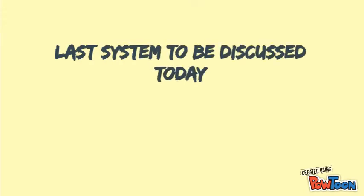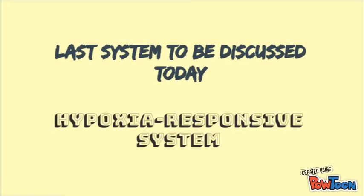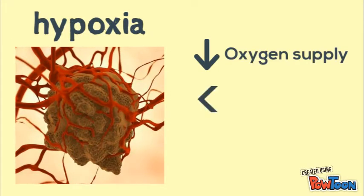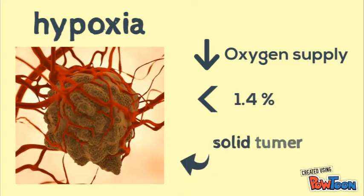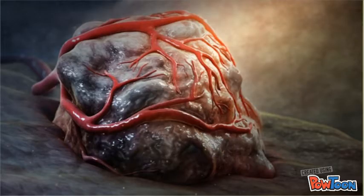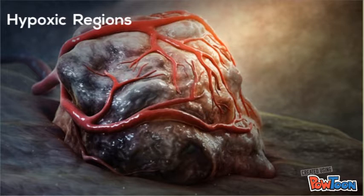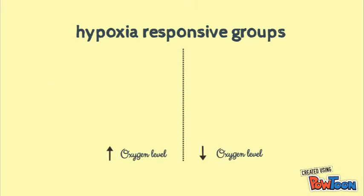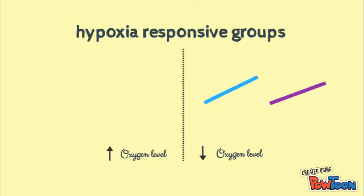The last system to be discussed today is the hypoxia-responsive system. Hypoxia is a condition in which the tissue has insufficient oxygen supply, less than 1.4%. For example, solid tumors contain hypoxic regions surrounding areas of impaired circulation and extensive necrosis. Recently, hypoxia-responsive groups were utilized to develop hypoxia-triggered drug-release systems for cancer treatment.